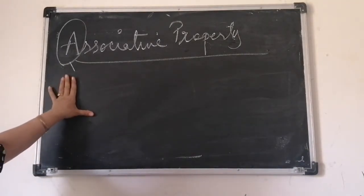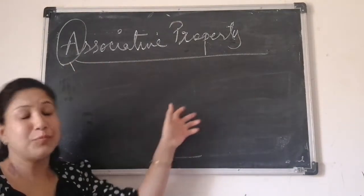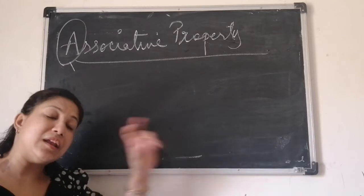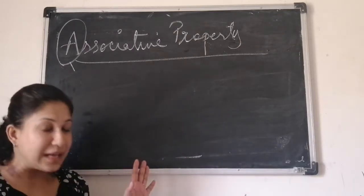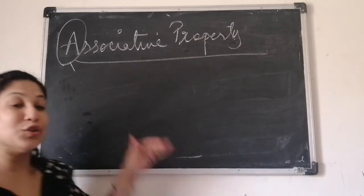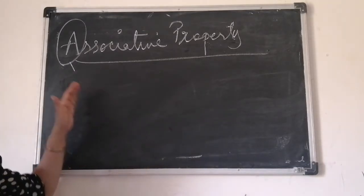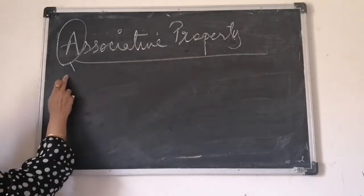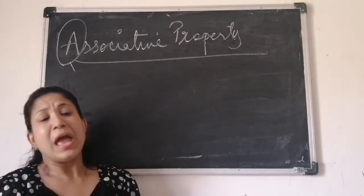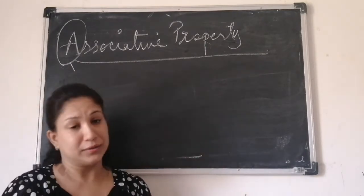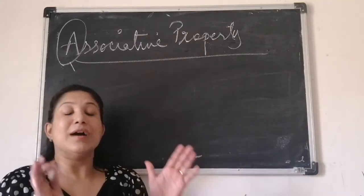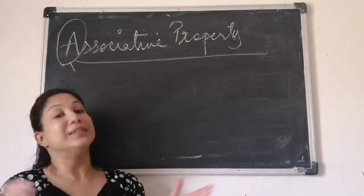This is also somewhat like commutative property. We learned that you take any two integers and add in any order, the answer will be the same, or you multiply in any order, the answer is going to be same. Here we will take more than two numbers. Associative property states that you take more than two numbers and add in any order or multiply in any order — the answer will always remain the same.